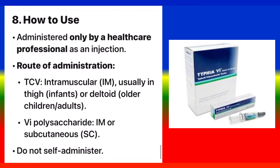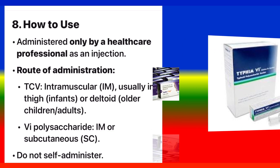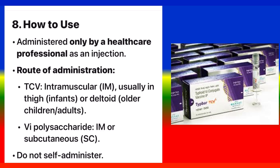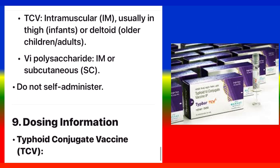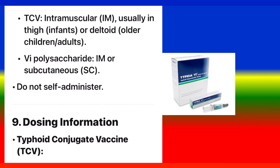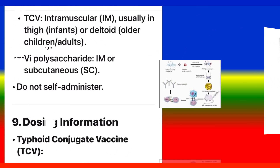How to Use: Administered only by a healthcare professional as an injection. TCV is given intramuscularly (IM), usually in the thigh for infants or the deltoid for older children and adults. The Vi polysaccharide vaccine can be given IM or subcutaneously (SC). Do not self-administer.